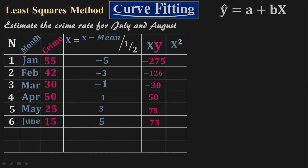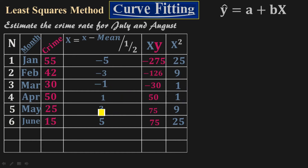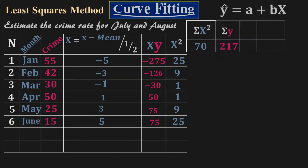Add another column for Capital X squared — just square each Capital X value. Negative 5 squared is 25, negative 3 squared is 9, negative 1 squared is 1, 1 squared is 1, 3 squared is 9, and 5 squared is 25. The sigma Capital X squared, summing all these values, equals 70.